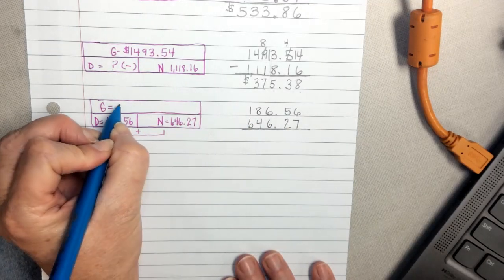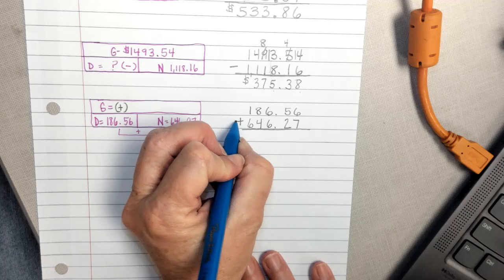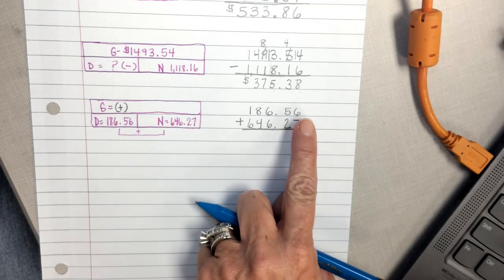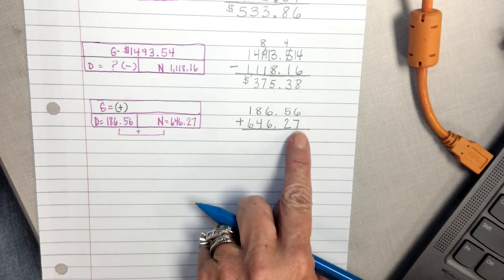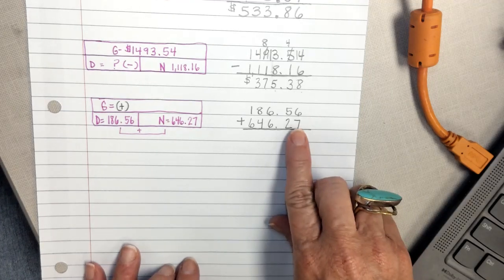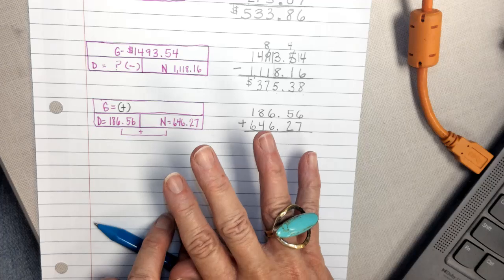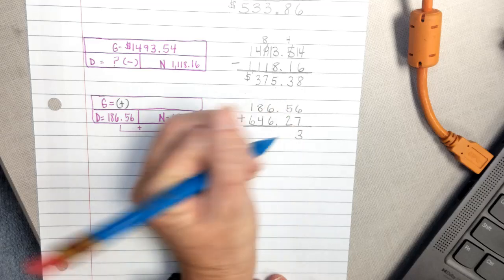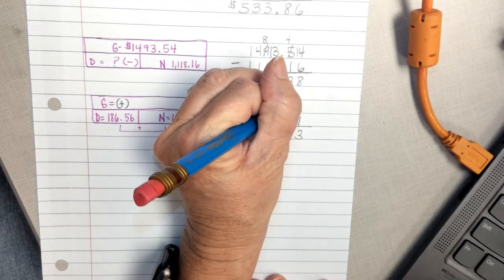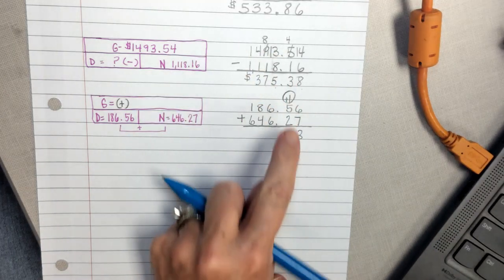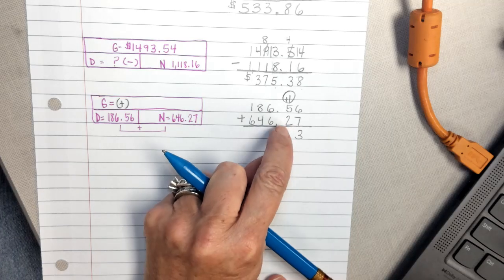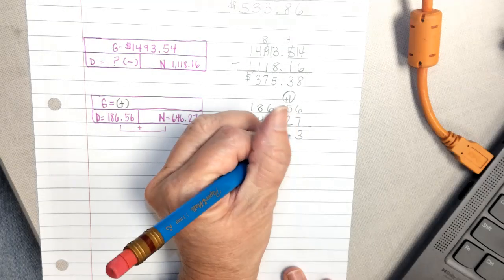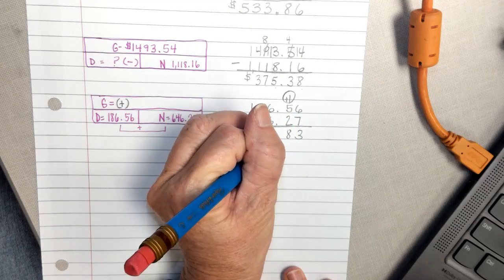We're going to add these together to find the answer, so I'm going to put my plus sign. And when we add, we always start on the right. So if I have 6 and I add 7 to that, I'm going to start with 7 and add 6. 8, 9, 10, 11, 12, 13. That is the answer. So write your 3 and regroup your 1 to the next place value. If I'm sitting at 5 and I add 2, that gives me 7 plus 1 more, which makes 8. Bring down your decimal.